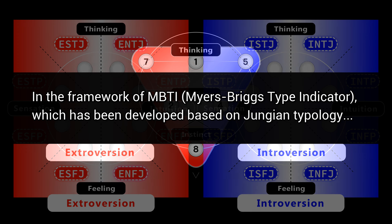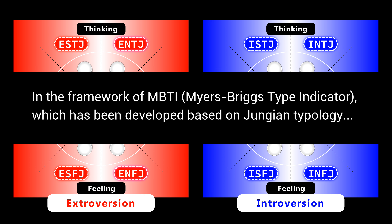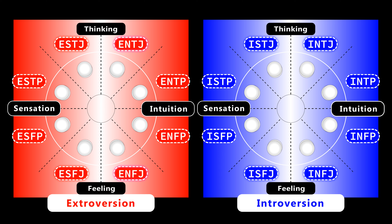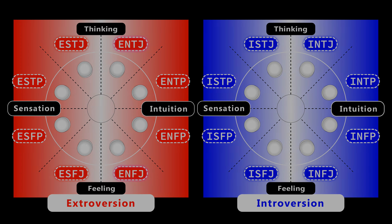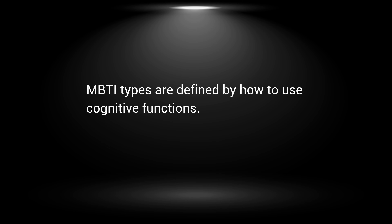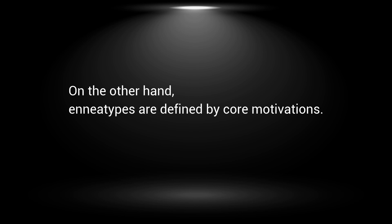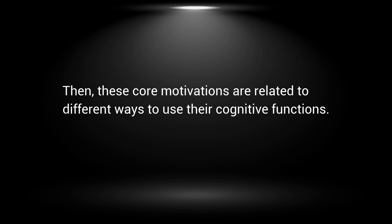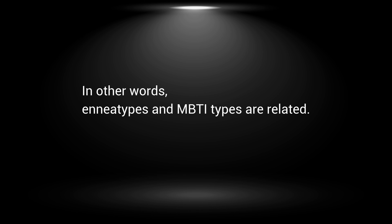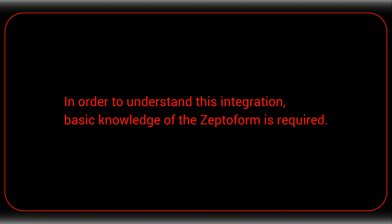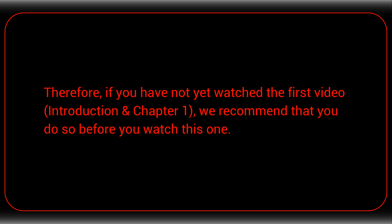In the framework of MBTI — Myers-Briggs Type Indicator — which has been developed based on Jungian typology, there are 16 personality types. MBTI types are defined by how to use cognitive functions. On the other hand, enneatypes are defined by core motivations. These core motivations are related to different ways to use cognitive functions. In other words, enneatypes and MBTI types are related. Note: in order to understand this integration, basic knowledge of the zeptoform is required. Therefore, if you have not yet watched the first video — the introduction and Chapter 1 — we recommend that you do so before watching this one.